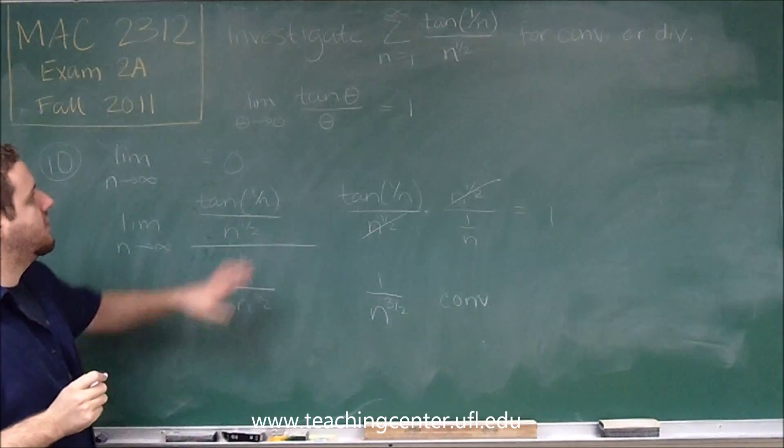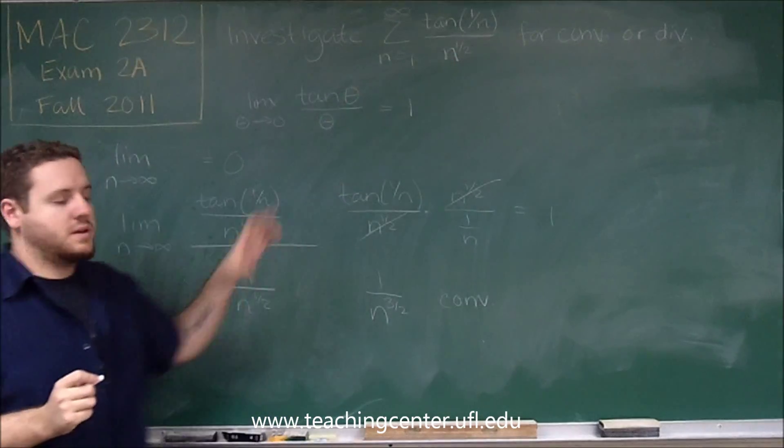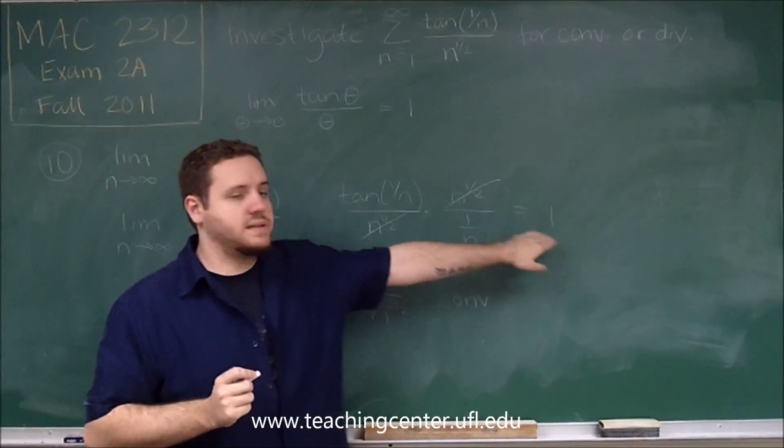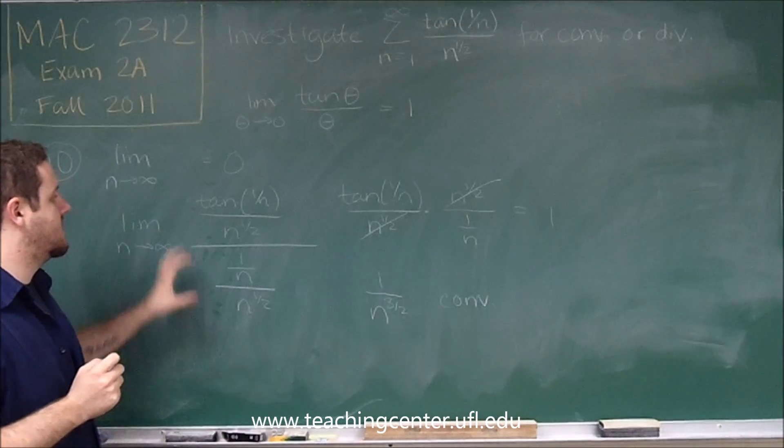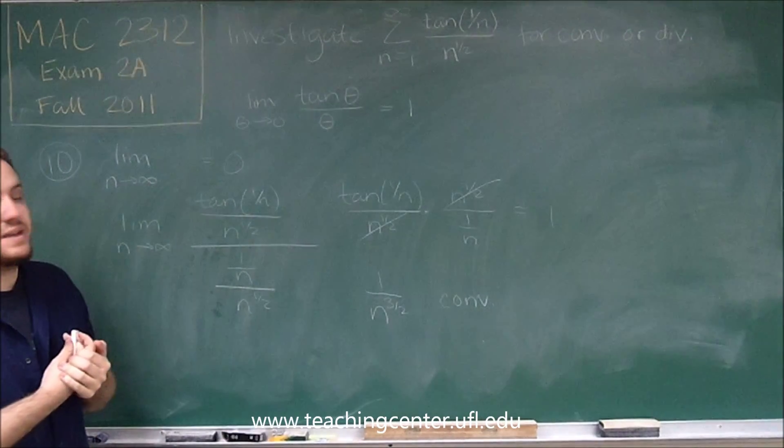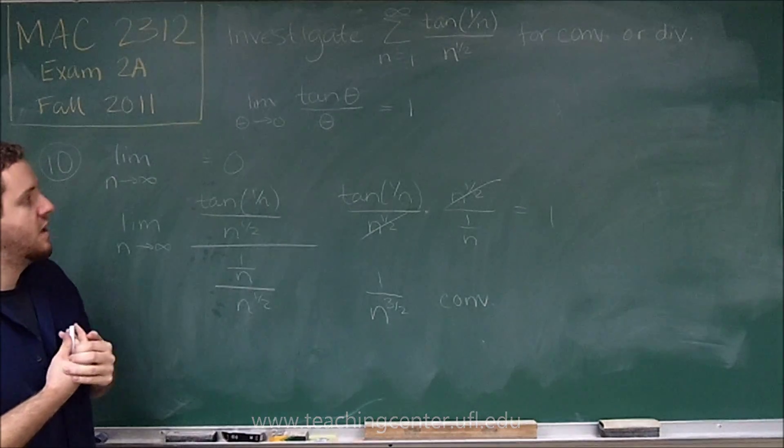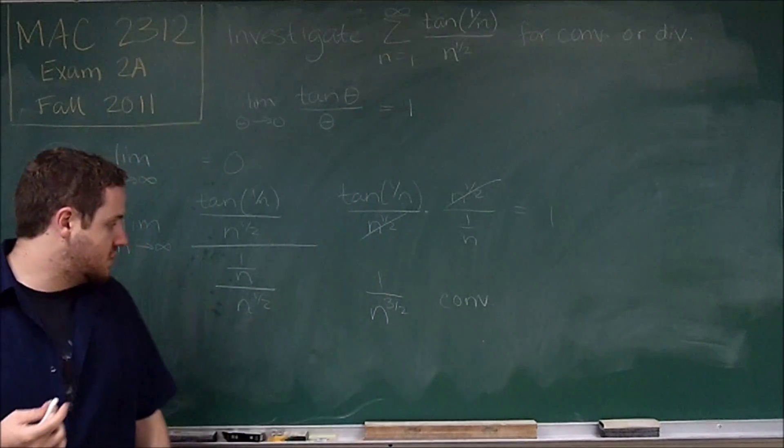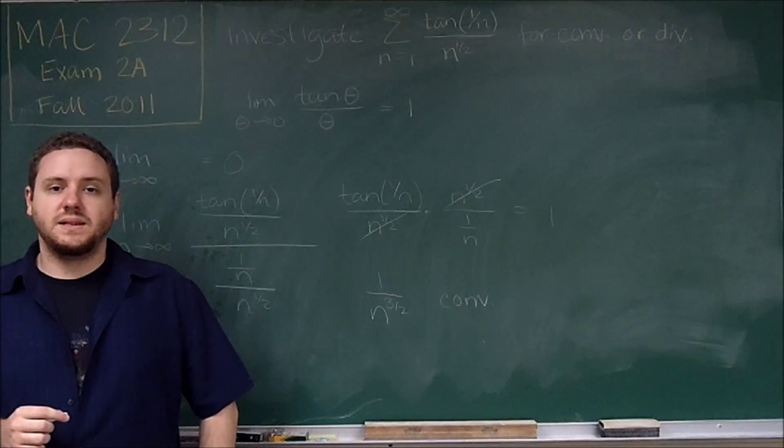So since we compared our series to one that we know converges, and by the limit comparison test we got a positive finite number, that tells us that our function has the same convergence or divergence which in this case is convergence. So therefore this series converges by the limit comparison test, which on your test there is answer choice D.